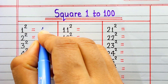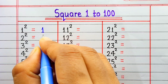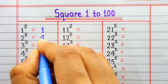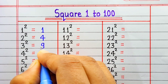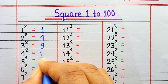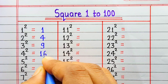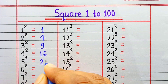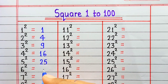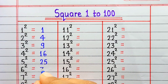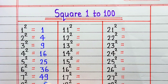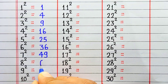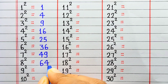Square of 1 is 1. Square of 2 is 4. Square of 3 is 9. Square of 4 is 16. Square of 5 is 25. Square of 6 is 36. Square of 7 is 49. Square of 8 is 64.